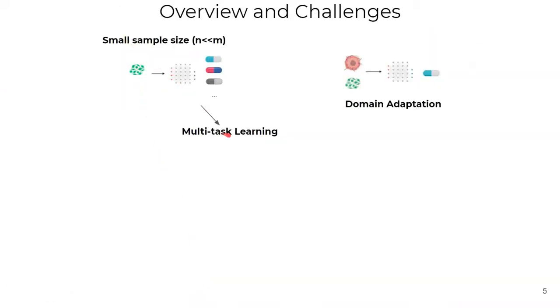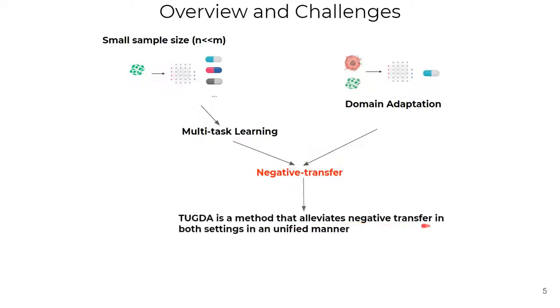Multitask learning when using cell lines, and domain adaptation to predict cancer drug response in patients. So, how can you have these two in a unifying manner? We observe that multitask learning and domain adaptation as being transfer learning paradigms are prone to negative transfer. So, TUGDA is a method that alleviates negative transfer in both settings in a unifying manner.